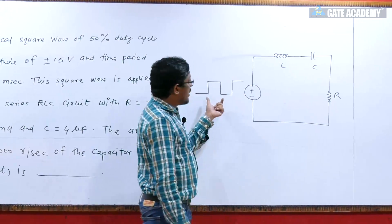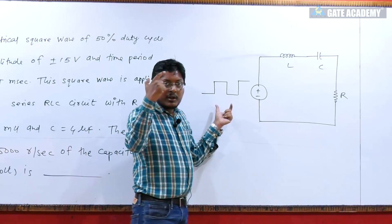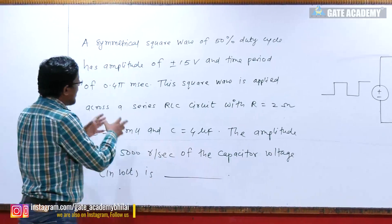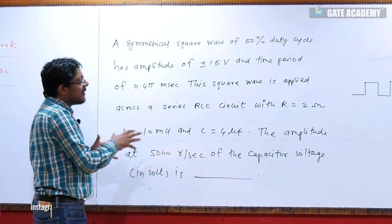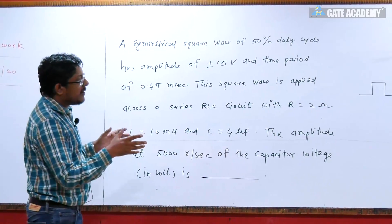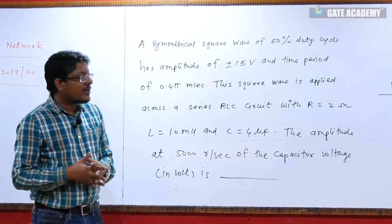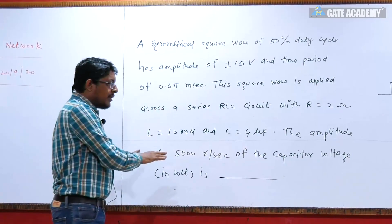A series RLC network, a bipolar square wave of plus minus 15 volt. So plus 15 volt and minus 15 volt you have given. And you have time period given that 0.45 millisecond. 50% duty cycle. So on or off time value will be the same, 50% duty cycle.